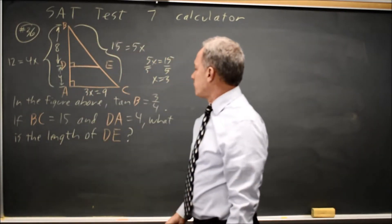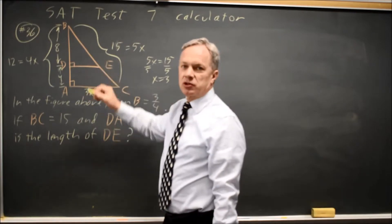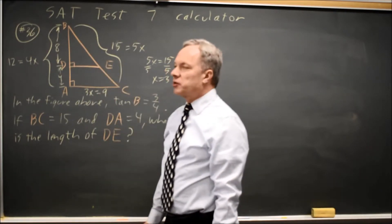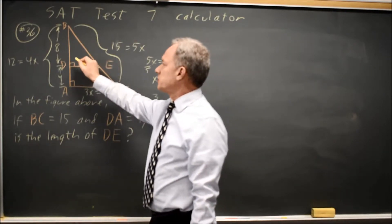And we're looking for side DE in this smaller triangle. This smaller triangle also has sides of ratio of 3 to 4,